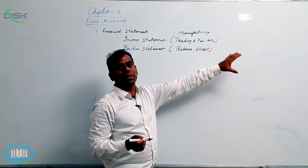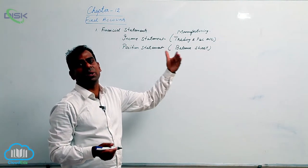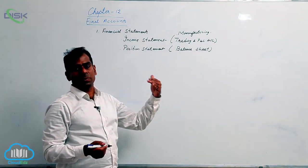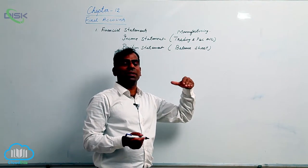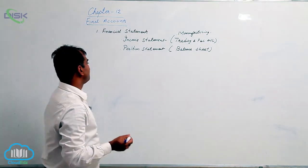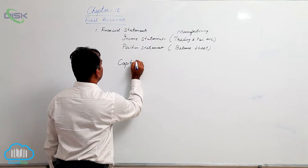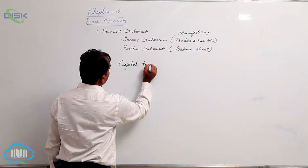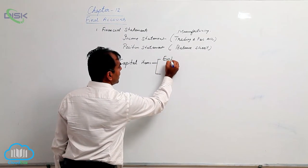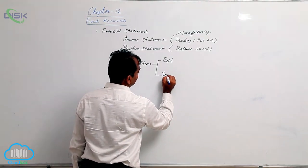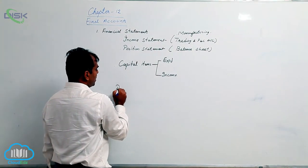Now we see how we relate the concepts previously discussed — capital expenditure, revenue expenditure, deferred revenue expenditure, capital income, and revenue income. When we talk about capital items, we have capital expenditure and capital income.